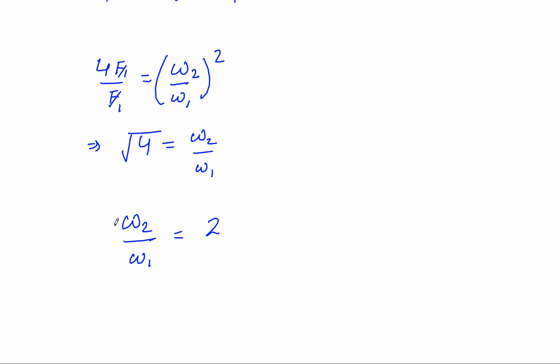So the ratio of speed omega2 by omega1 is 2, and this is option number B — the correct answer. I hope you have understood. You can practice more by following the link given below. Thank you.